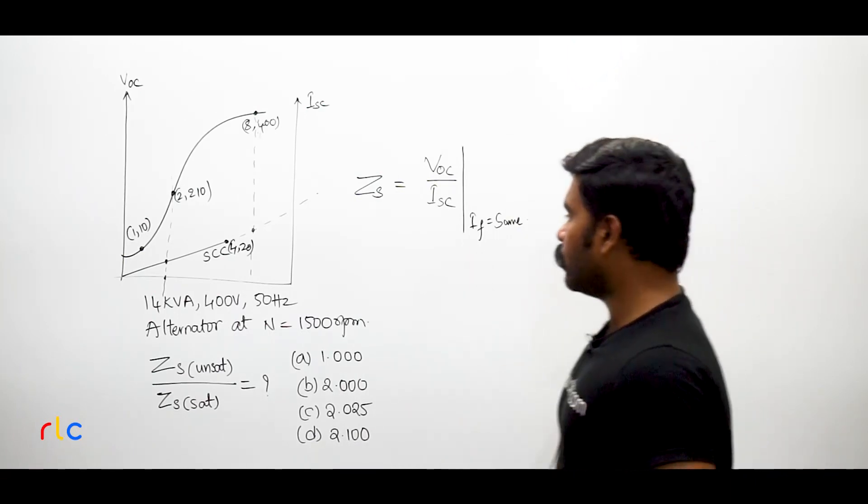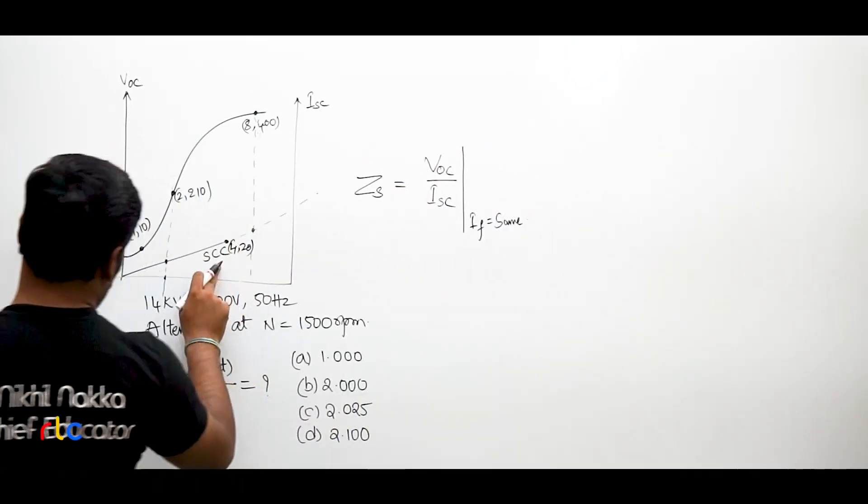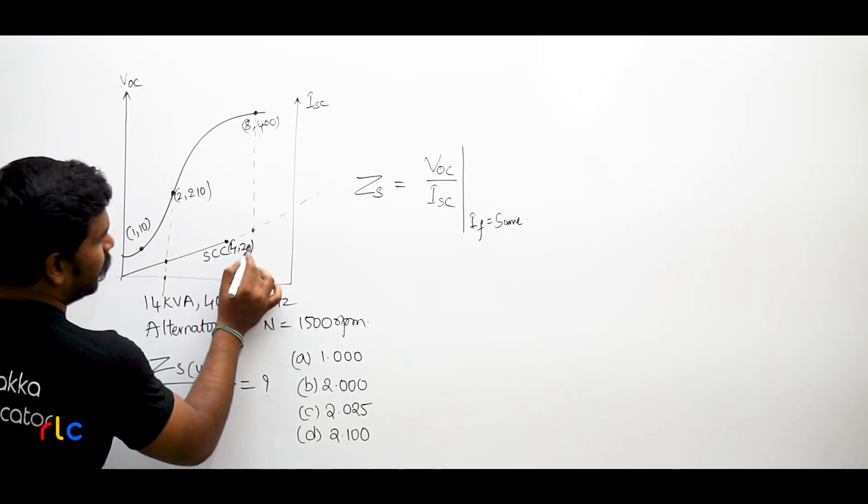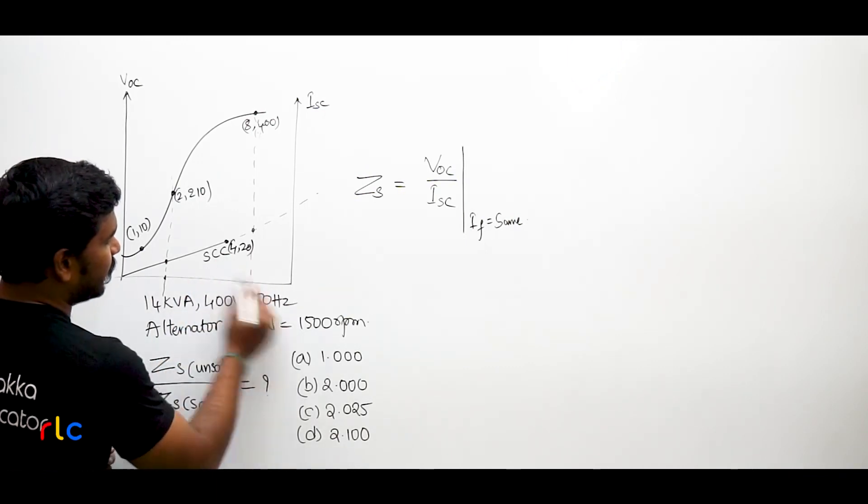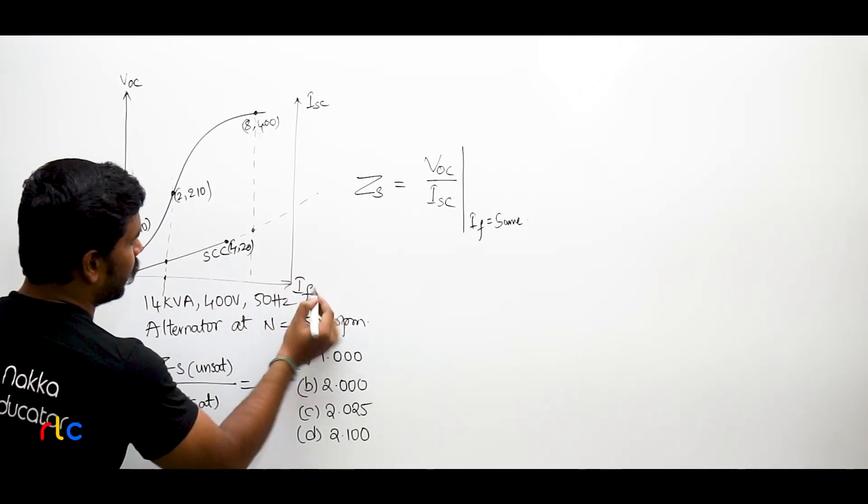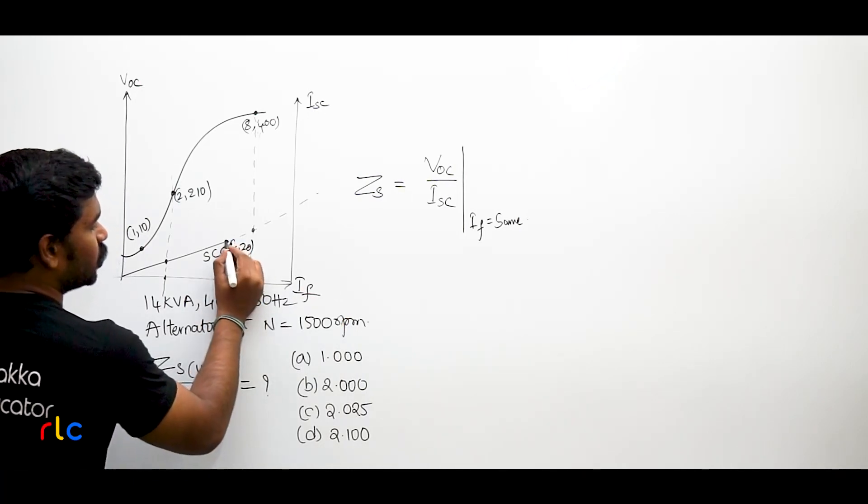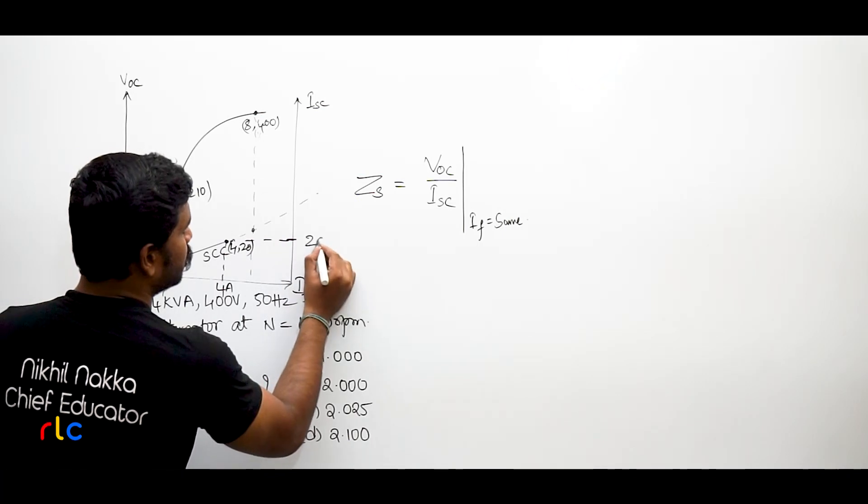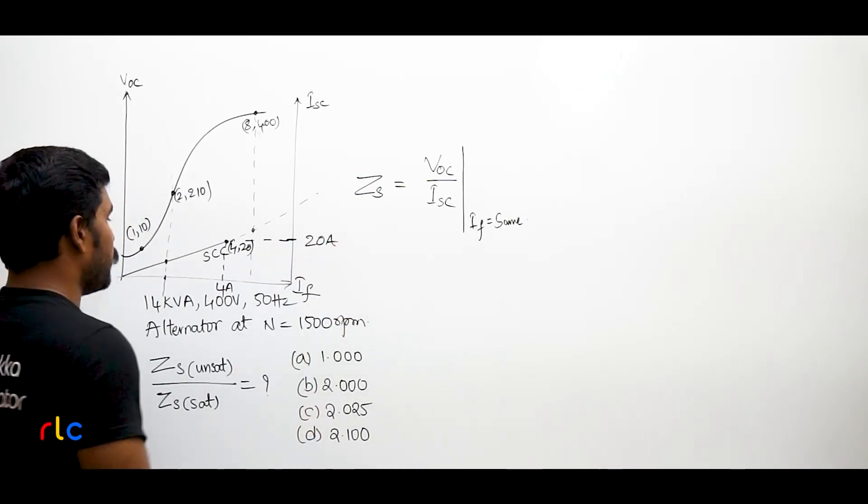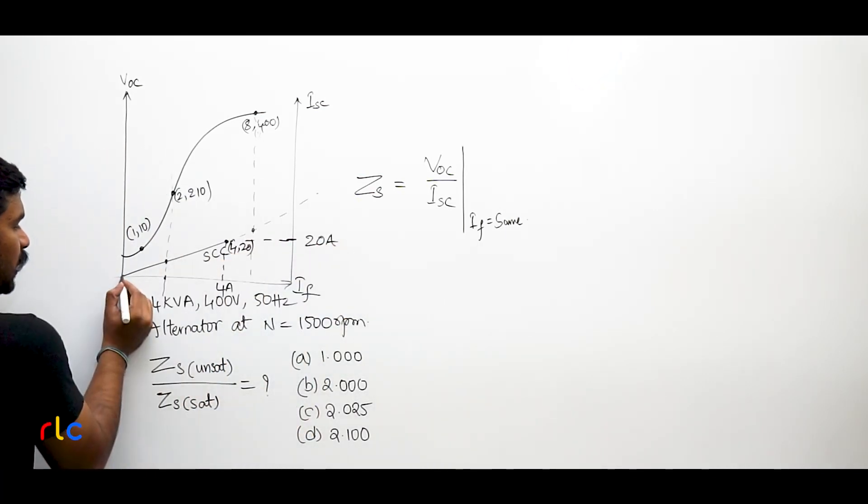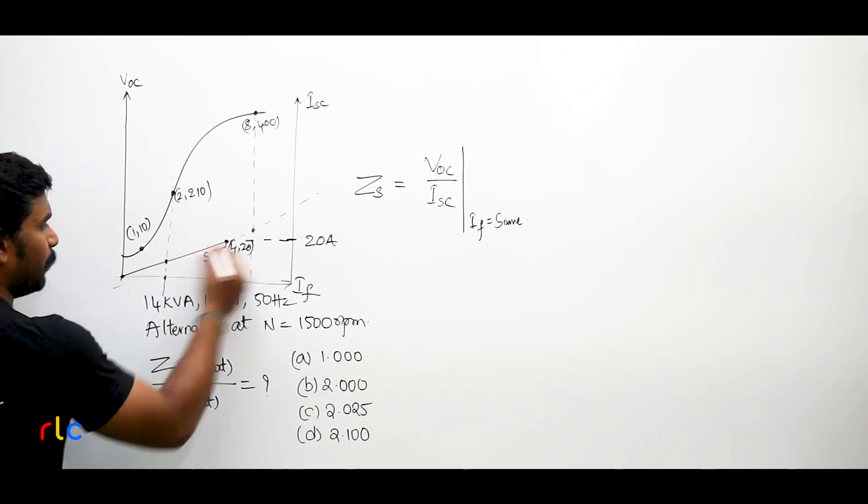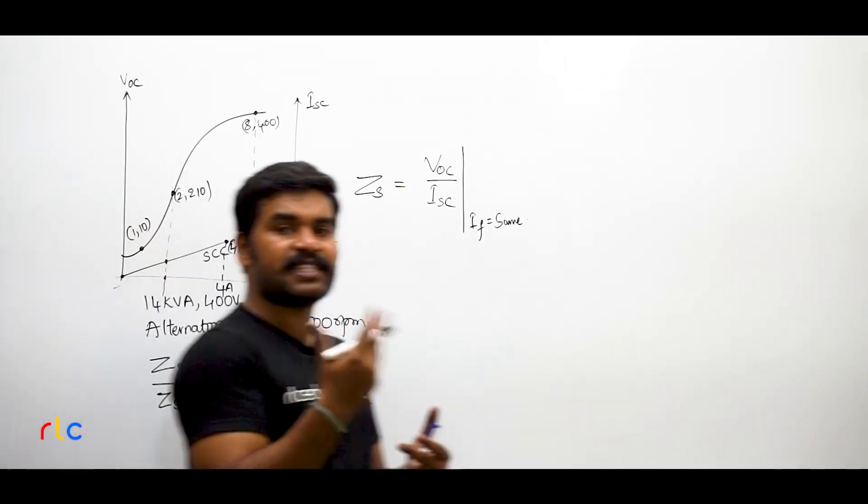So that is what we are going to do here. He says that according to the short circuit test 4 comma 20. 4 comma 20 means what is the X axis? X axis is the field current, that means at 4 Amperes of the field current the short circuit current is how much? 20 Amperes. And you see, what is the short circuit curve? The short circuit curve is nothing but a straight line passing through the origin, that means it is a linear graph.